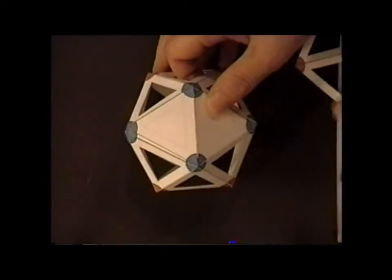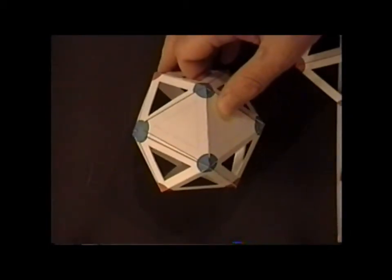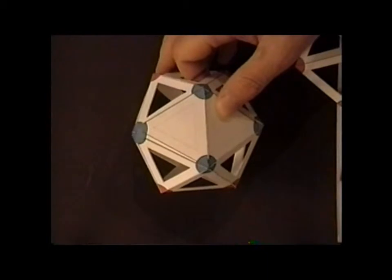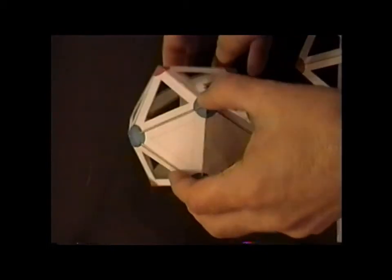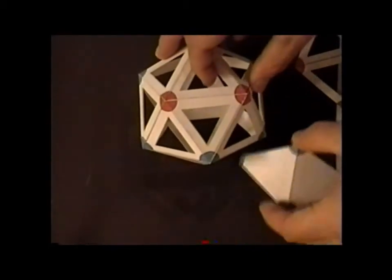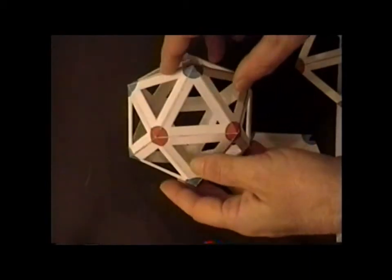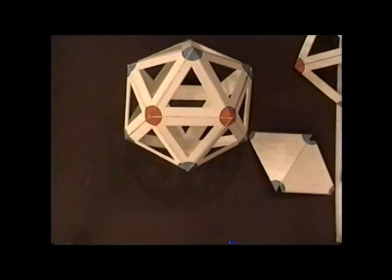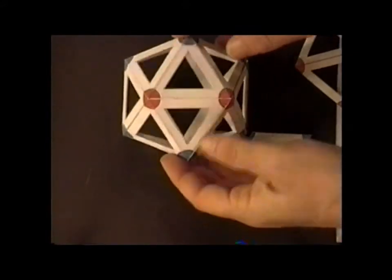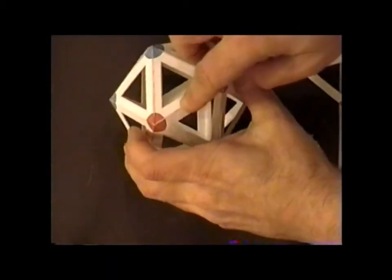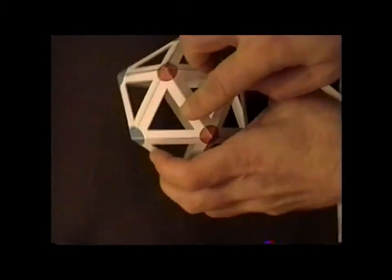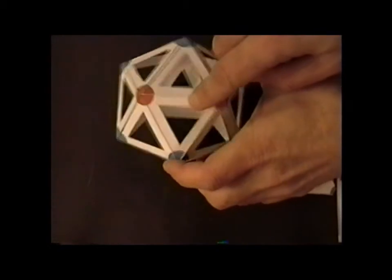So the highest-order rotation axis that we have for this particular molecule is a C2. Now if we look at the side, we would also notice that for these red and blue atoms here, there's also a C2 axis. If we were to rotate it along this axis here, we would see that all the atoms line up as they were before.